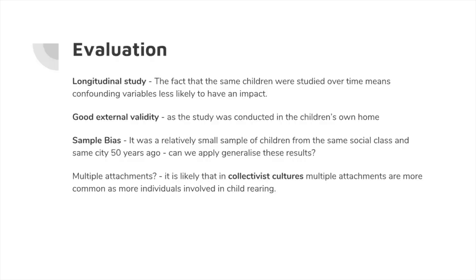However, maybe we've got poor internal validity — the mothers were the ones collecting the data quite often. So are they going to be accurate? Could there be social desirability bias? There's also potentially a sample bias: these are children all from Glasgow, all from working-class families. Can we generalise these results to families outside that class or culture? And this study was 50 years ago — are these results applicable to modern-day parenting styles?